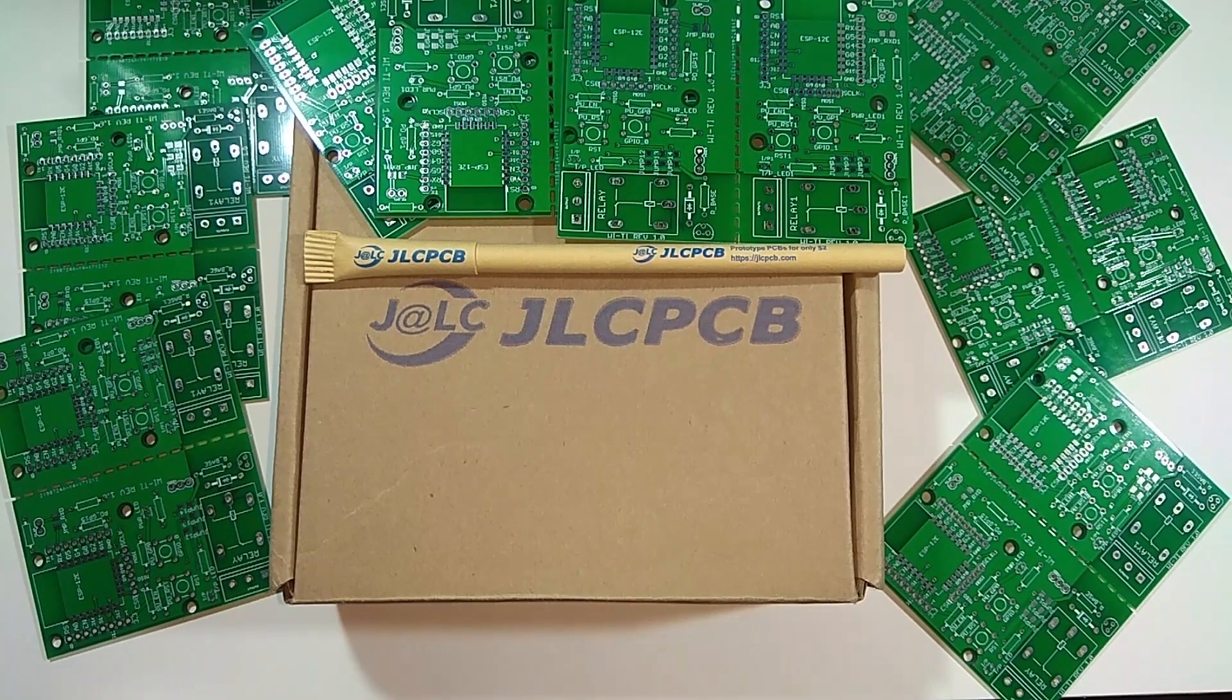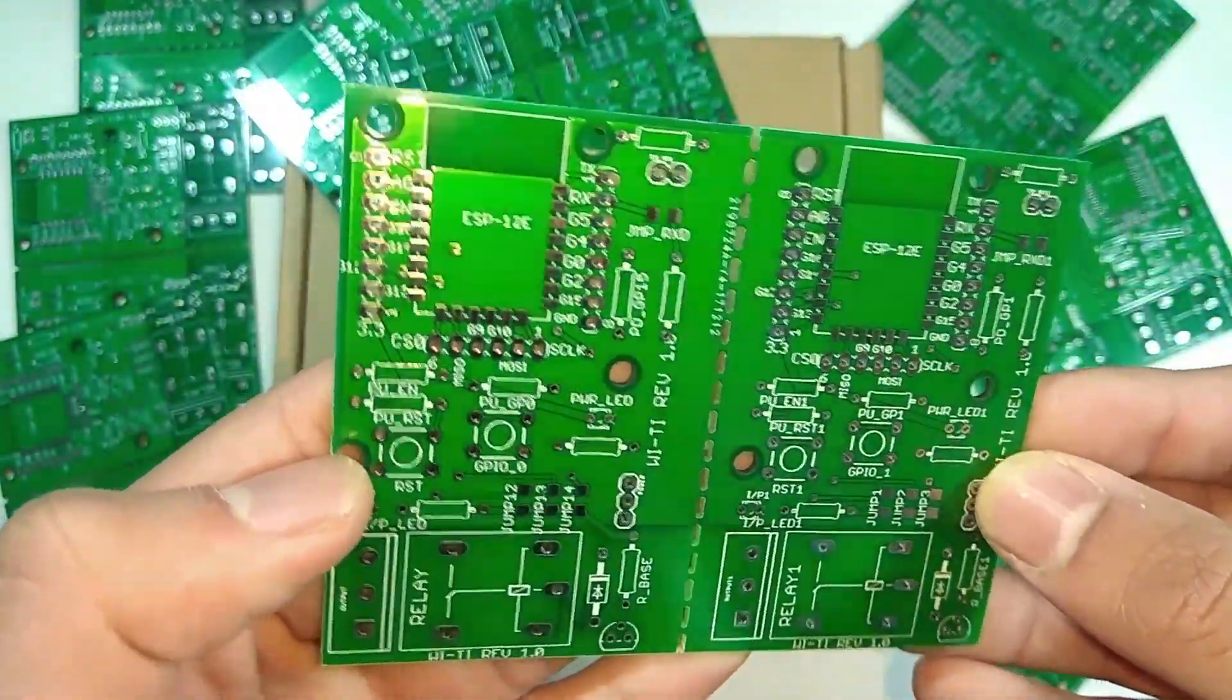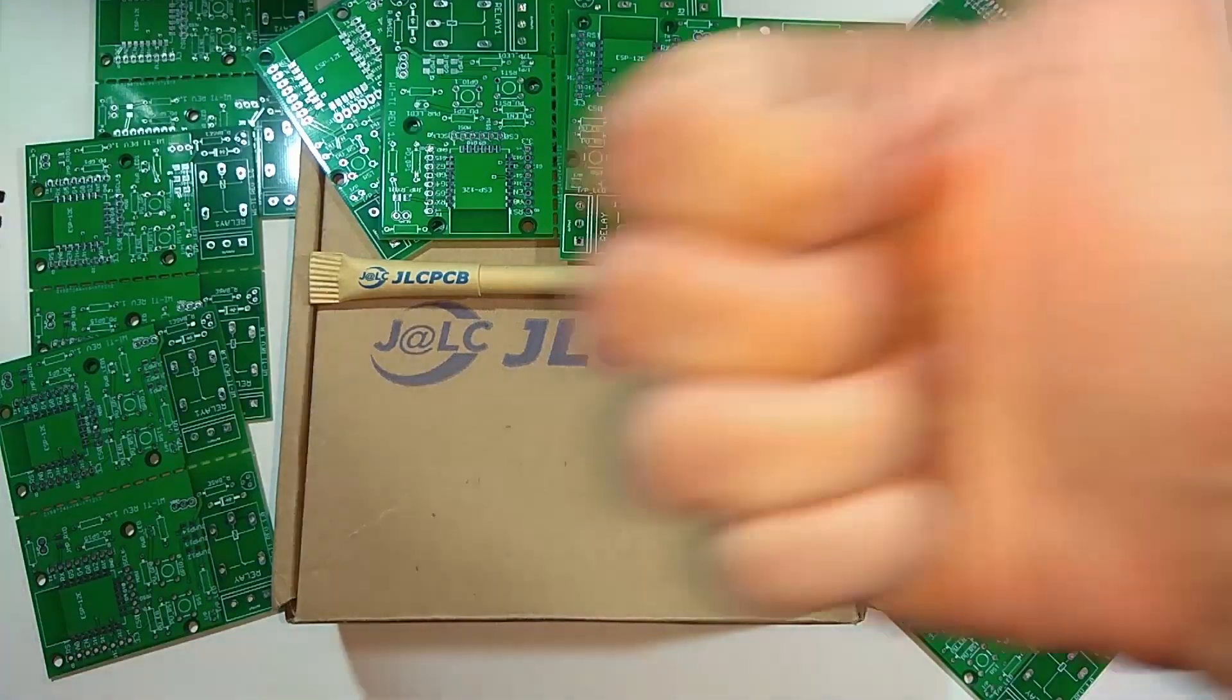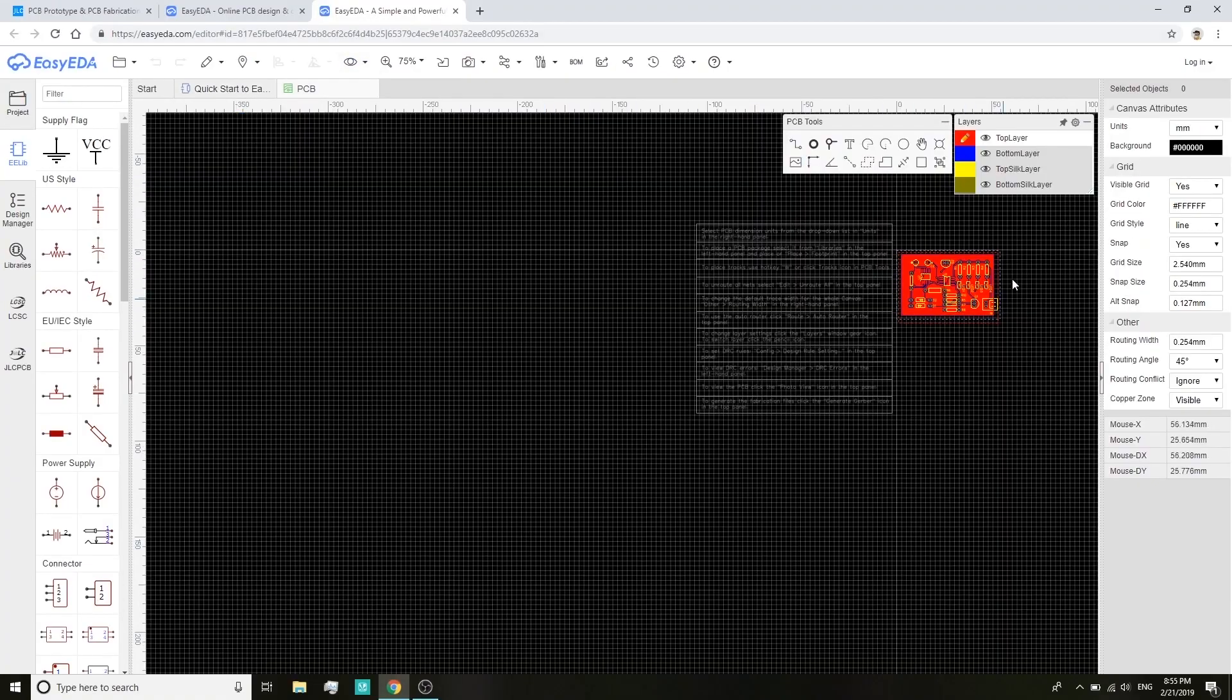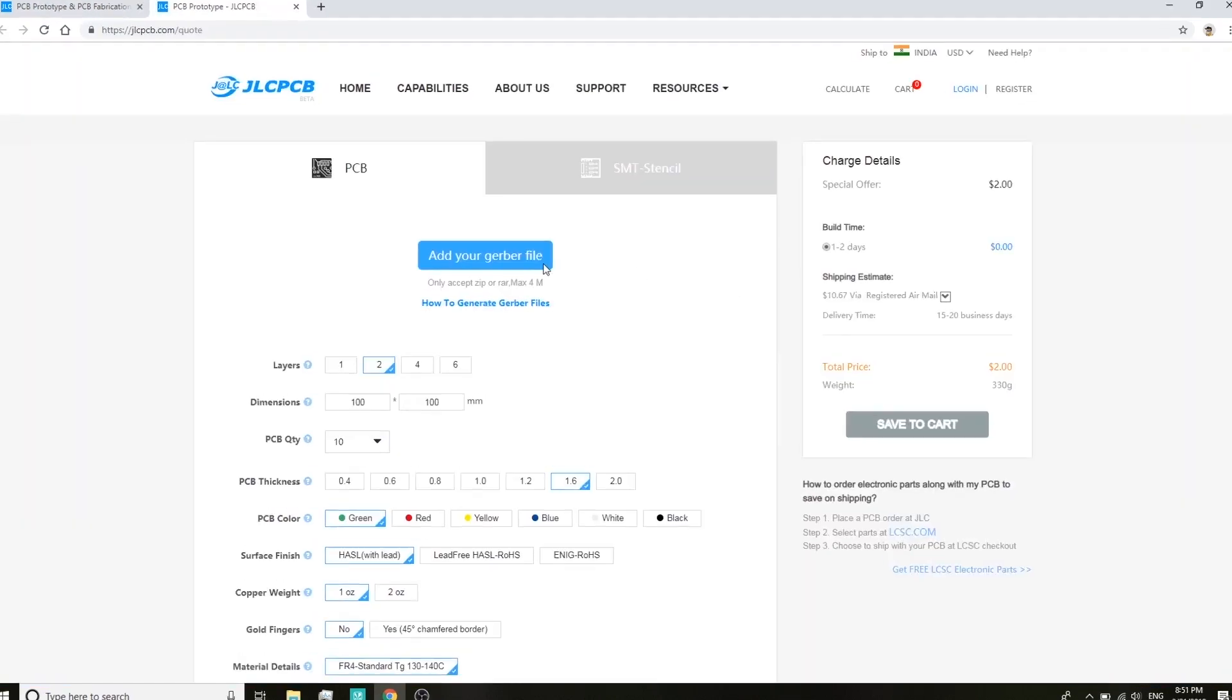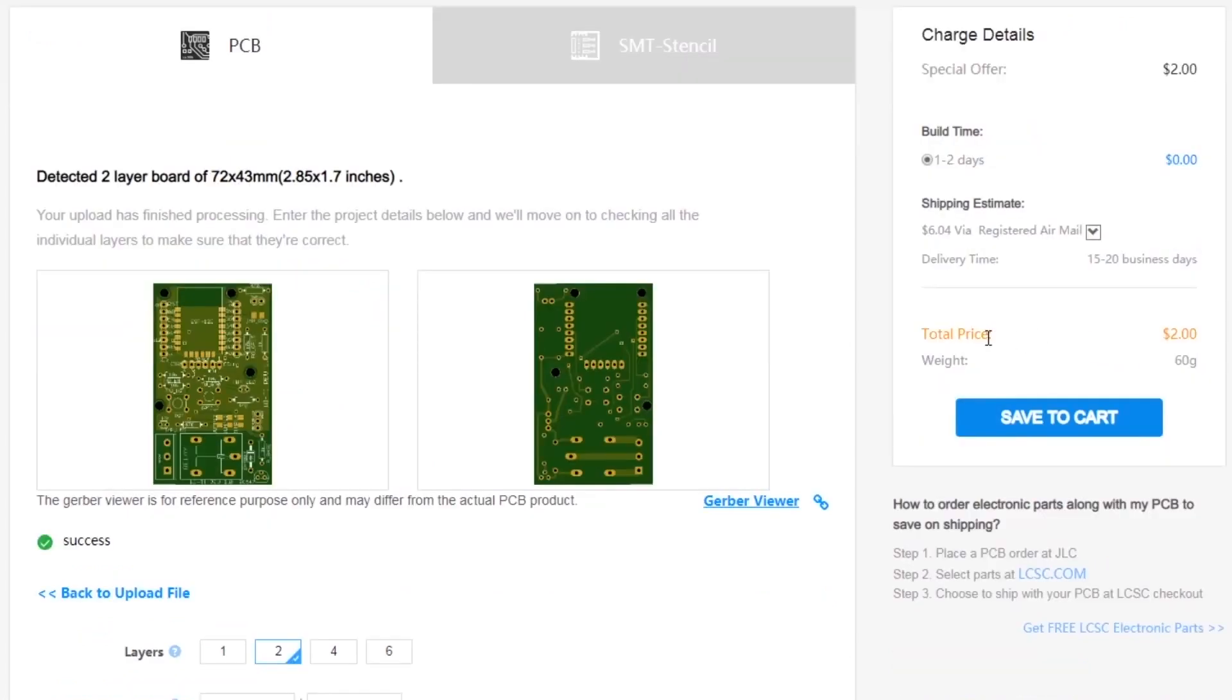I order all my PCBs from JLCPCB.com. They offer 10 PCBs for two dollars only. They also offer quick turnaround time and 24-hour production period. To design a PCB you can use EasyEDA and then generate Gerber files for your project. Upload the Gerber files on JLC PCB and get your PCB manufactured for cheap. They're currently also offering discounts on shipping.